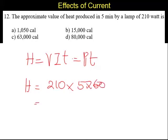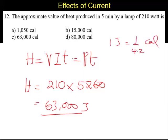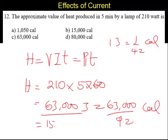So the answer is going to be around 63,000, but this is in joules. We have to convert it to calories. 1 joule is equal to 1 by 4.2 calories. So divide 63,000 by 4.2, we will have the answer in calories. 63,000 by 4.2 gives 15,000 calories.